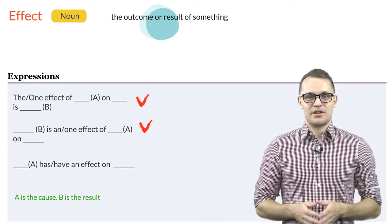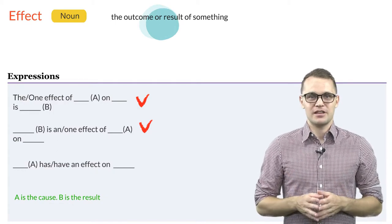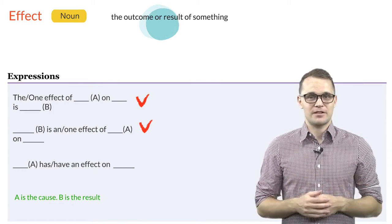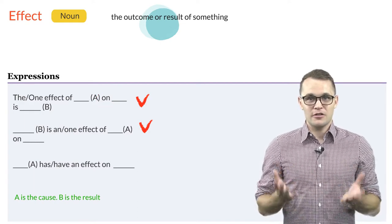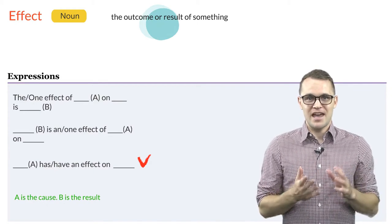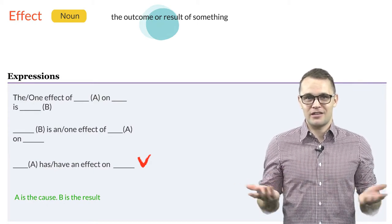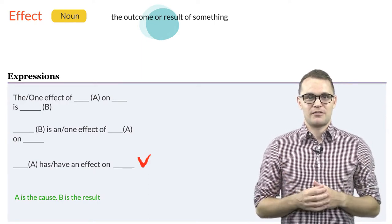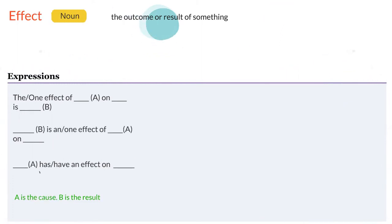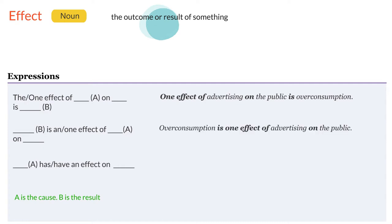The first and the second pattern describe what causes the effect — this is the A part — and they define what the effect is — the B part. Additionally, we use the preposition ON to define the thing that is impacted. The third pattern only describes that something has an impact on something else, without actually defining the effect or consequence in detail. For example: one effect of advertising on the public is overconsumption, or overconsumption is one effect of advertising on the public. An example of the third pattern could be: advertising can have a significant effect on the public.